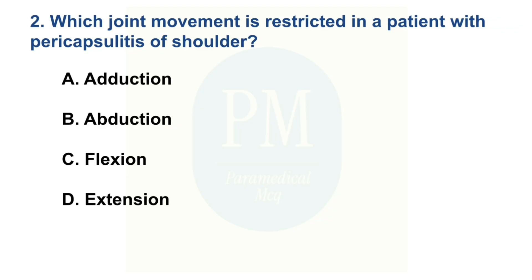Which joint movement is restricted in a patient with pericapsulitis of shoulder? Option A: Adduction. Option B: Abduction. Option C: Flexion. Option D: Extension. The correct option is Option B — Abduction.